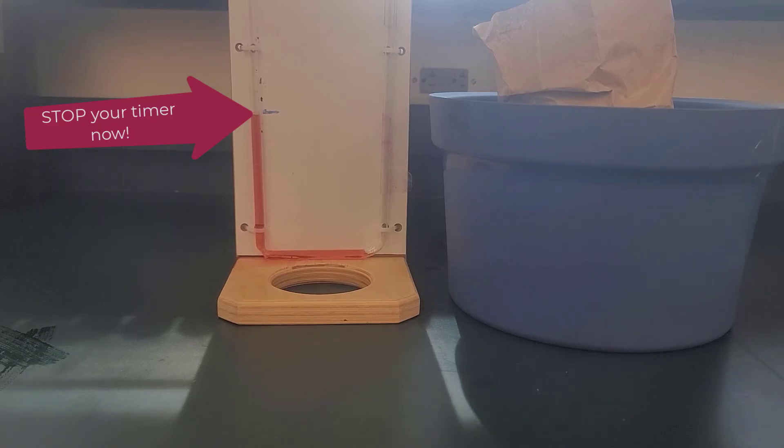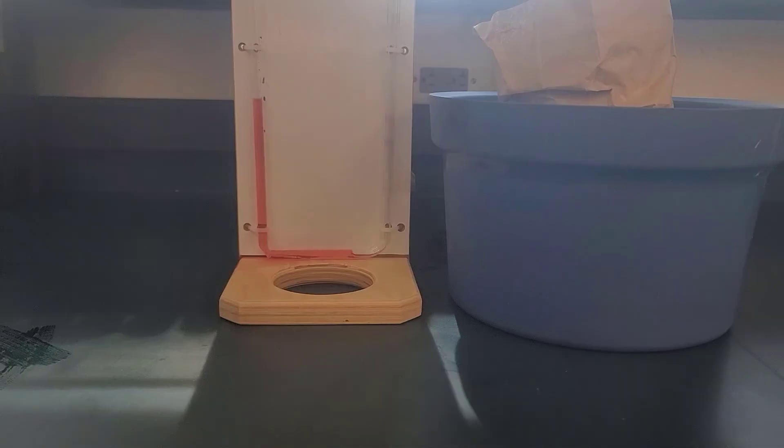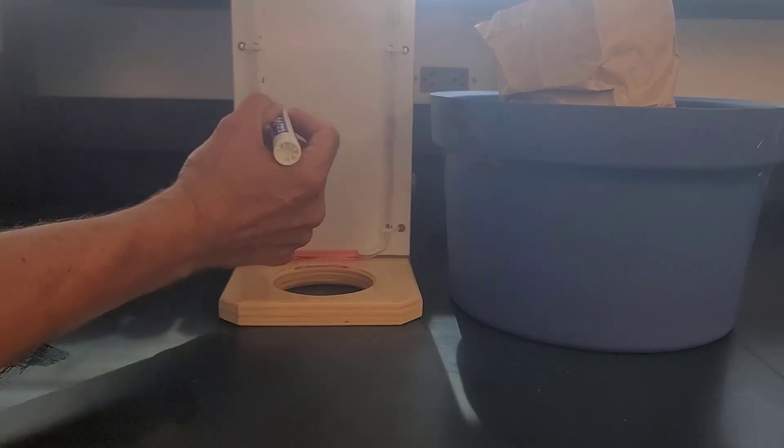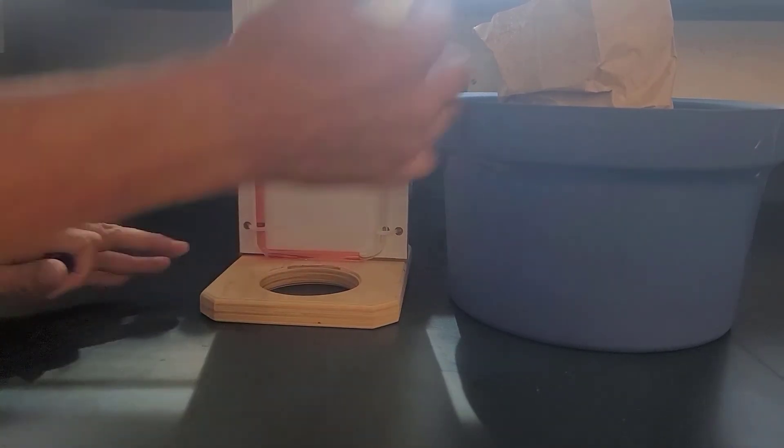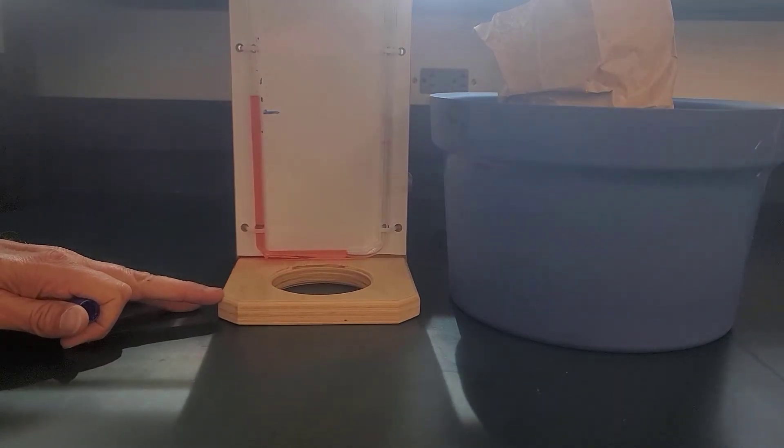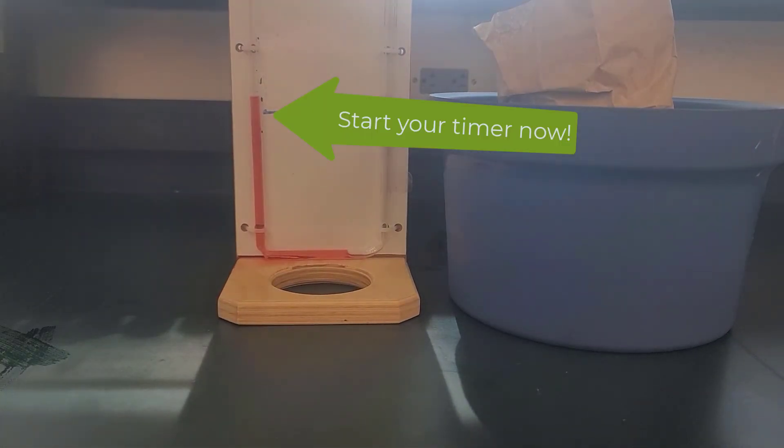And stop. So that's trial two. And now this is our last one. Same thing, mouse gets a break. Mark the fluid level, inject the two cc's of air, start your timer.